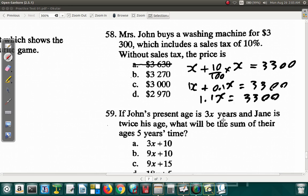When you divide by 1.1, you get it. So this is the same as $3,300. You multiply both of them by 10. It's over 11. So 11 into 33 is 3. So you have 3,000.